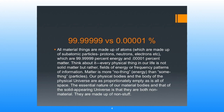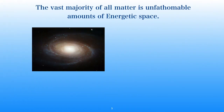The essential nature of our material bodies and that of the solid-appearing universe is that they are both non-material. They are made up of non-stuff. We are almost entirely energy frequency patterns, interference patterns that show up in this third dimension as something that we relate to as physical. So the vast majority of all the matter that we see in this universe is a tremendously large amount of energetic space.